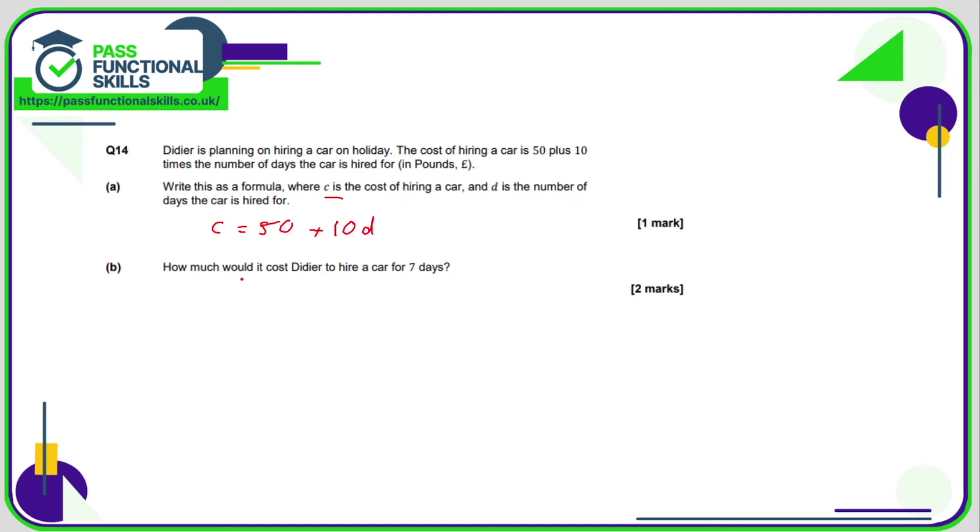So for seven days we're just going to use this formula. The cost is going to be 50 plus 10d, which means 10 times d. Ten times 7 is 70, so 50 plus 70—it comes to a total of £120.